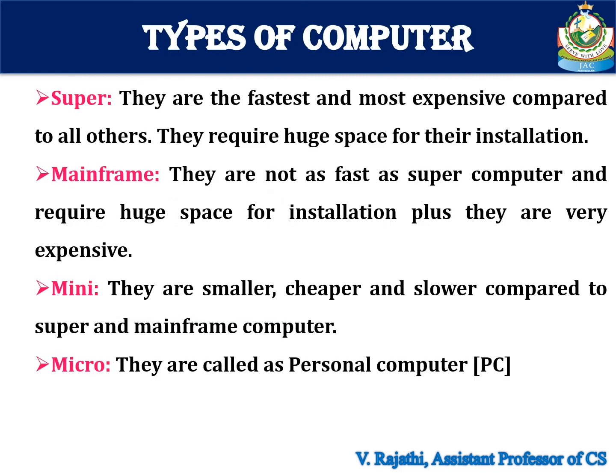Types of computer. The first one is supercomputer — they are the fastest and most expensive compared to all others, and they require huge space for installation. The second is mainframe — they are not as fast as supercomputers, require huge space for installation, and are very expensive. The third is minicomputer — they are smaller, cheaper, and slower compared to super and mainframe computers. And the final one is microcomputer — they are called personal computers.